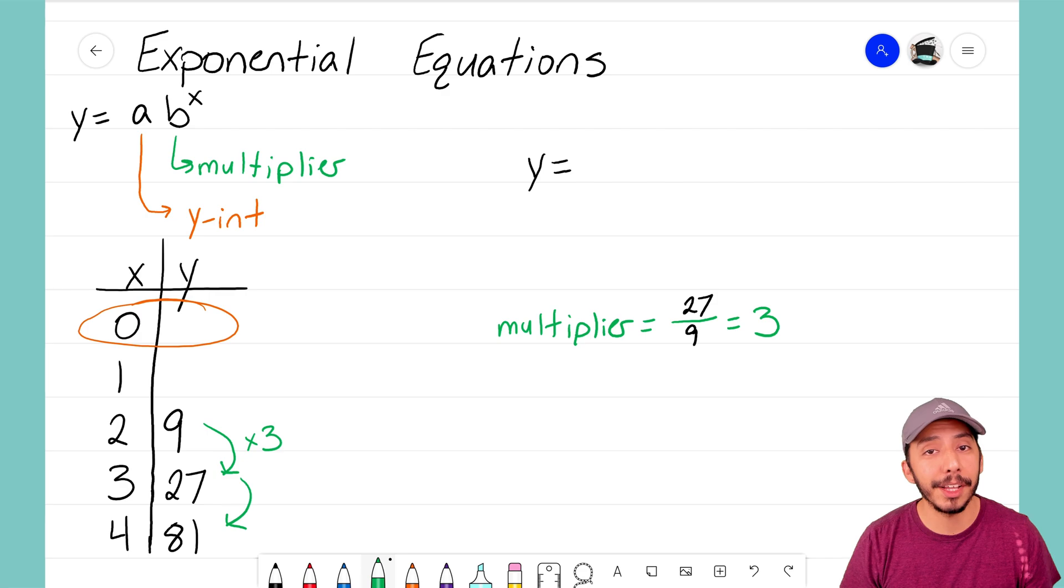Now if you're a little unsure with that number and you're not sure if it's the same number here, you could always repeat this process with 81. I could take 81 and divide it by the term before 81, which is 27. If I do that, 81 divided by 27, I would see that we still get that same multiplier of 3.